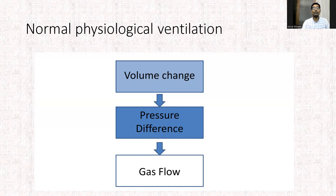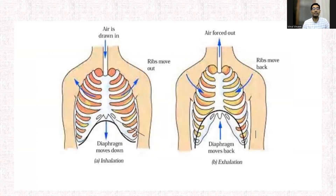How is this volume change caused? This is mainly by the respiratory muscles, primarily by the diaphragm, which moves downwards and causes an increase in negative intrapleural pressure, which draws air into the lungs. The intercostal muscles act to stabilize the ribcage during inspiration. Expiration is passive in normal physiological ventilation, and it occurs by the relaxation of the diaphragm, and as a result, because of the elastic recoil of the lungs and also the recoil of the ribcage, the intrapulmonary pressure increases and the air is forced out of the lungs.